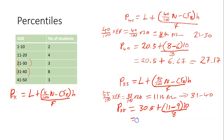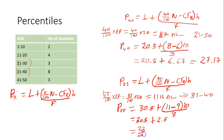So we have 30.5 plus — 11 minus 9 gives 2. And 2 times 10 is 20. 20 divided by 8 gives 2.5. So 30.5 plus 2.5 gives 33. The 55th percentile is 33. And the 40th percentile is 27.17.